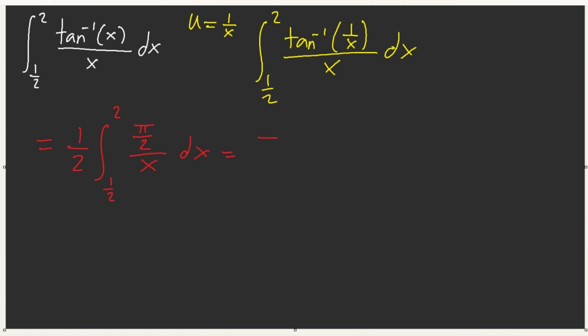So this is just pi over 4, ln of x, from 1/2 to 2. ln 2 minus ln 1/2, that's ln 1/4. I believe. Yeah. ln 1/4. And this, by log rule, this simplifies to pi over 2, ln of 2. Very, very quick, very fast. Just like the previous one.